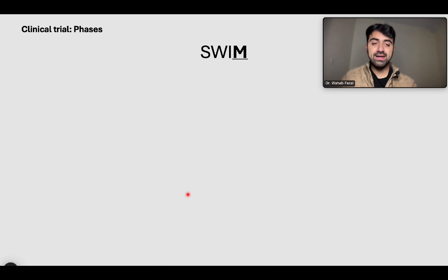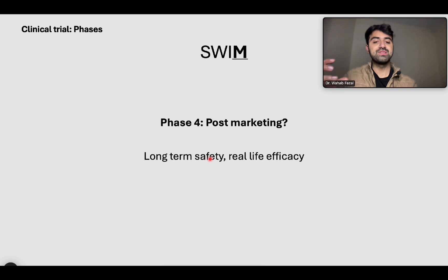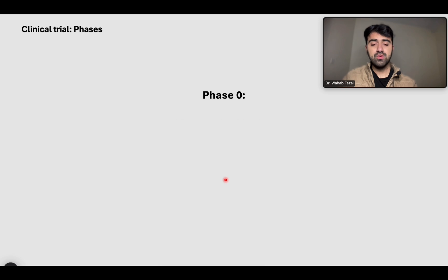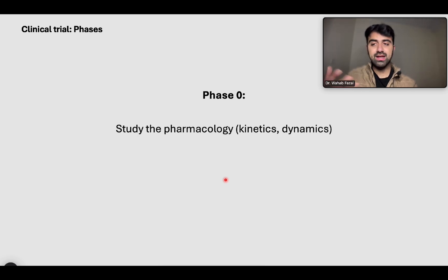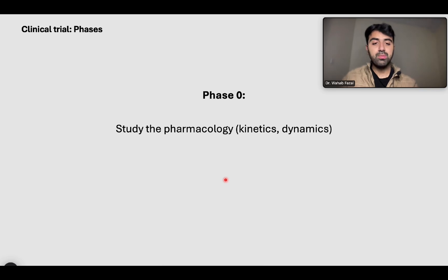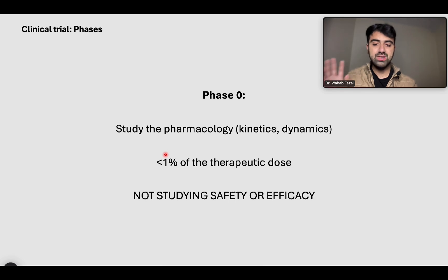Phase four is post-marketing data — the drug has now entered the market. You want to see the long-term safety profile and the real-life efficacy of the drug across a large population. Phase zero, added for completeness, is just before phases one through four. We want to know the pharmacokinetics — how the drug works with the body — using less than one percent of the therapeutic dose. We are not yet studying safety or efficacy.